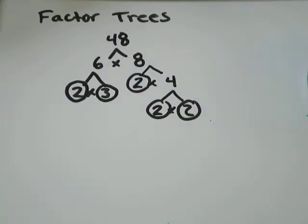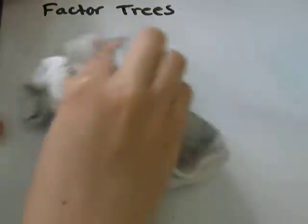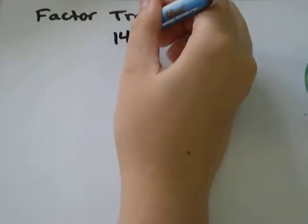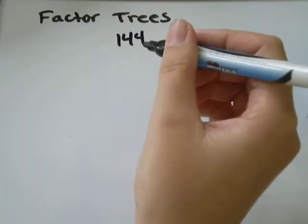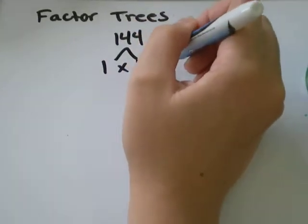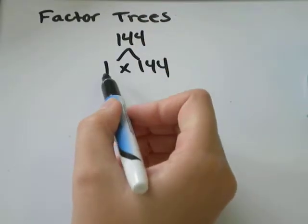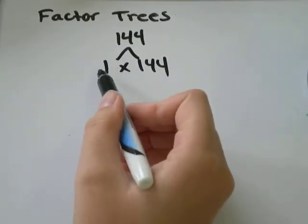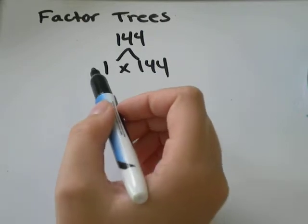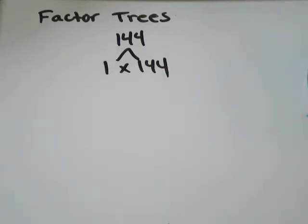Let's do another example. Let's do the number 144. Now, it would not be correct to say that that is 1 times 144, because 1 is one of those numbers that's not really a prime number, even though it looks like it. It's not applicable. We can't use it in our factor tree.